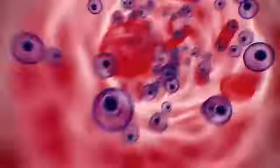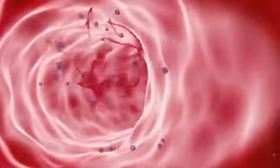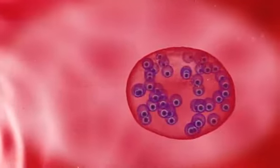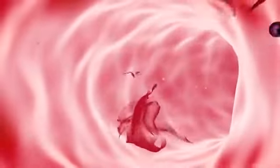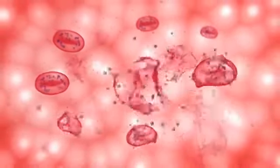They then infect healthy red blood cells, reproducing and eventually rupturing the cell, liberating more merozoites, which in turn go on to infect other cells, leading to the massive destruction of red blood cells.